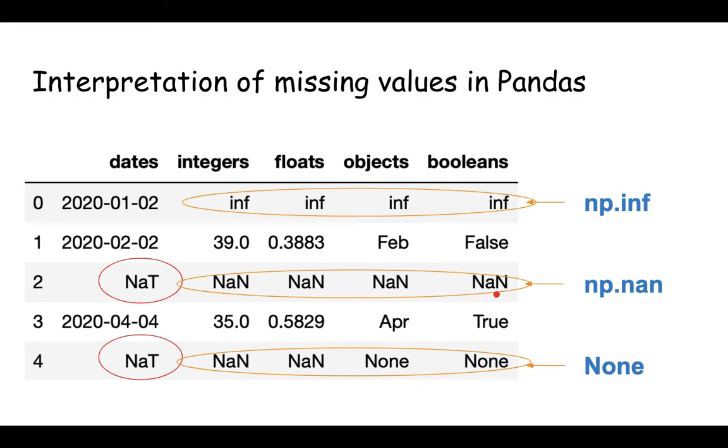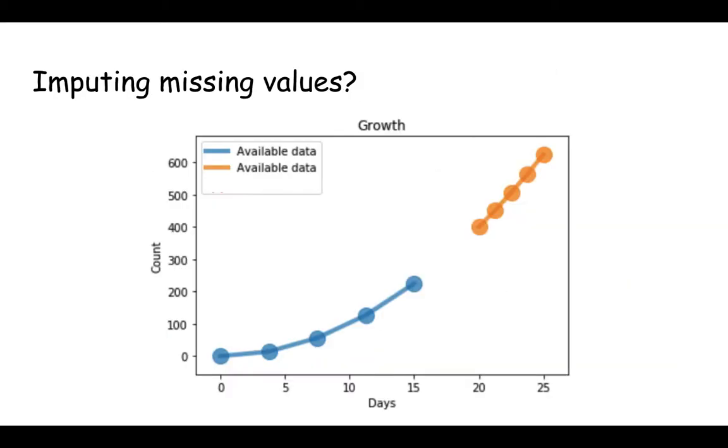Now moving on, let's look at one example. This is a made-up example where we have x-axis, there are days, and y-axis, there is count. So we are looking at growth of something here, and we can see that the blue line is slowly rising up and there is a break there, and then it continues as an orange line.